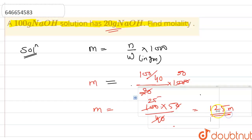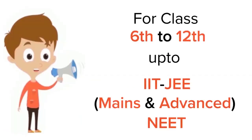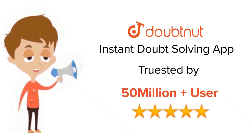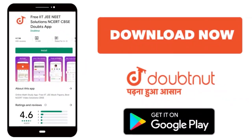125. I hope it is clear to you. Thank you very much. For class 6 to 12, IIT-JEE and NEET level, trusted by more than 5 crore students. Download Doubtnut app today.